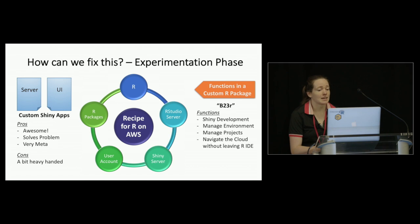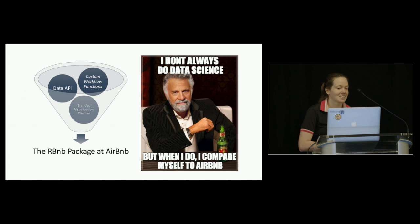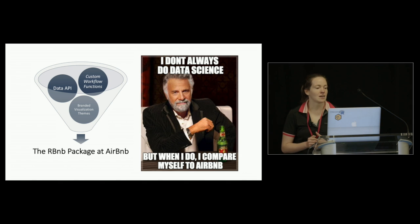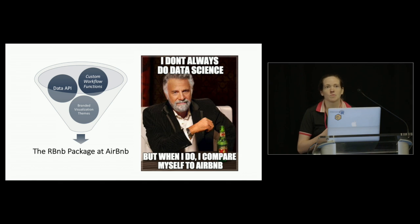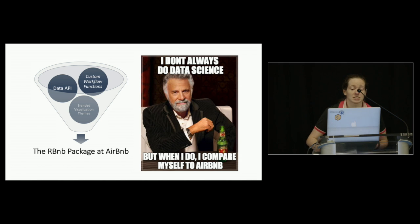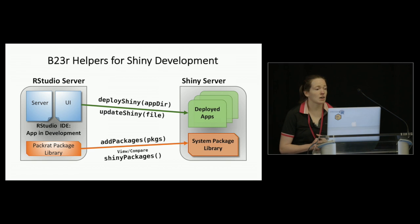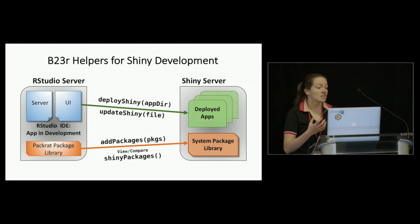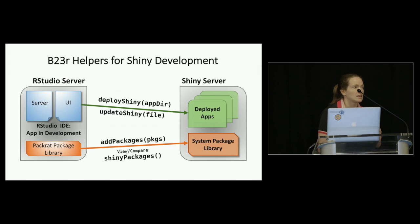Our goal with B23R is very similar to other internal packages, but we're hoping that people outside of our internal team will be able to use it eventually. Here are our B23R helpers for Shiny development. In the end, they're very simple functions, but they solve this huge problem and make testing and iterating through Shiny development so much easier.